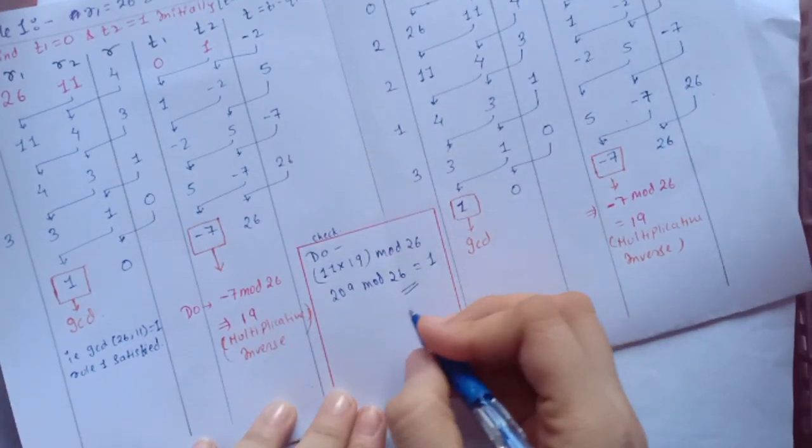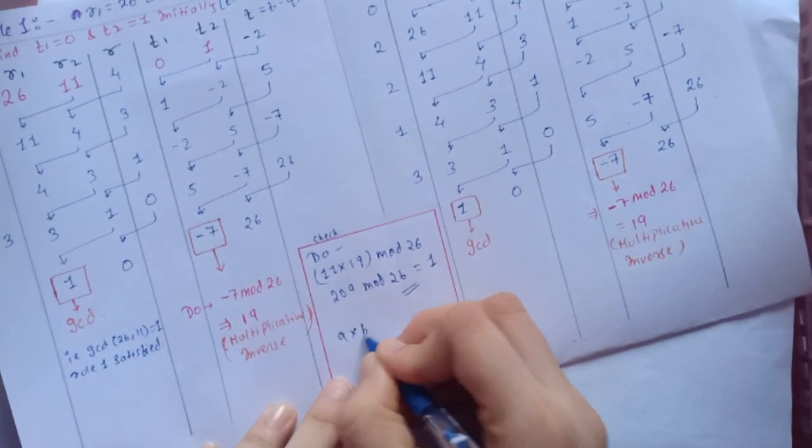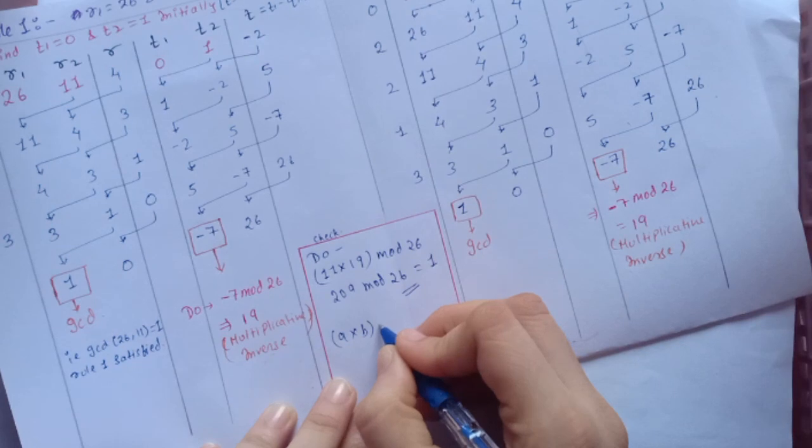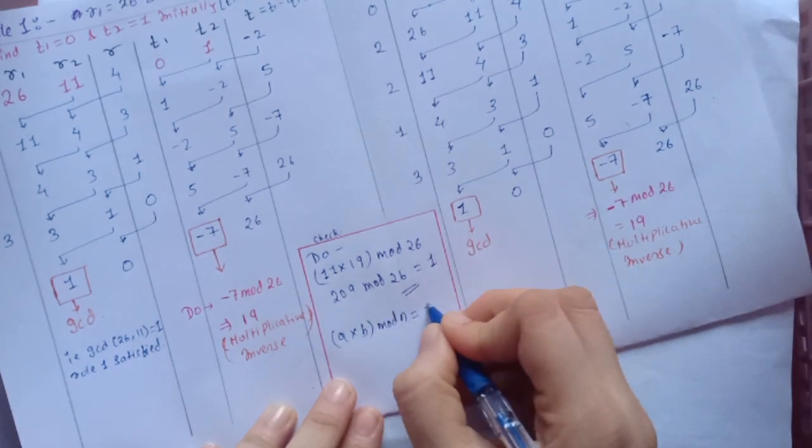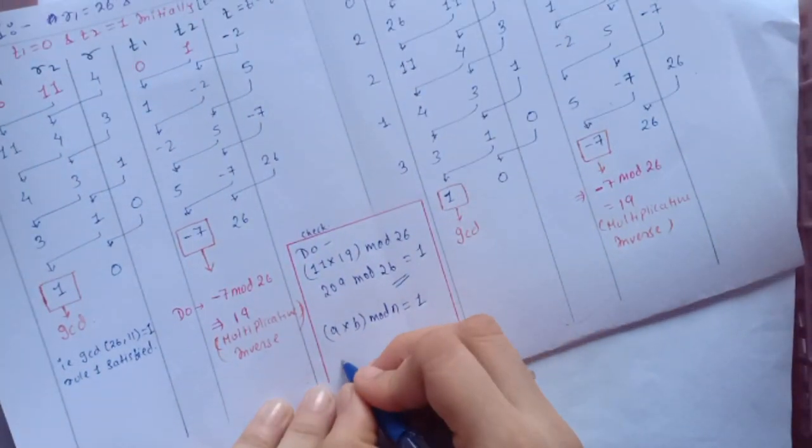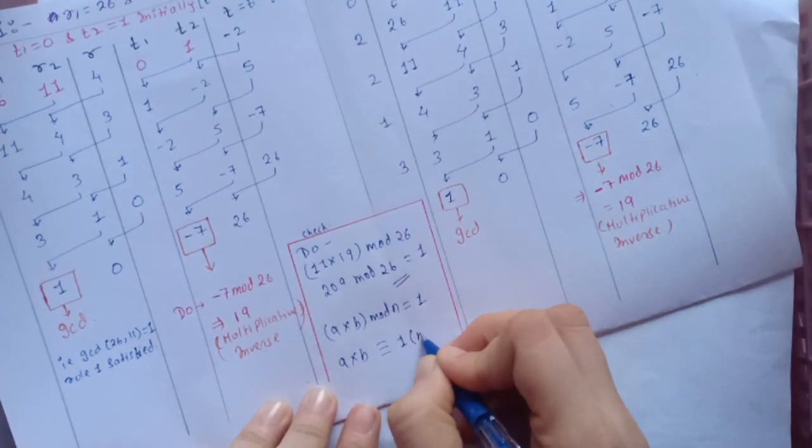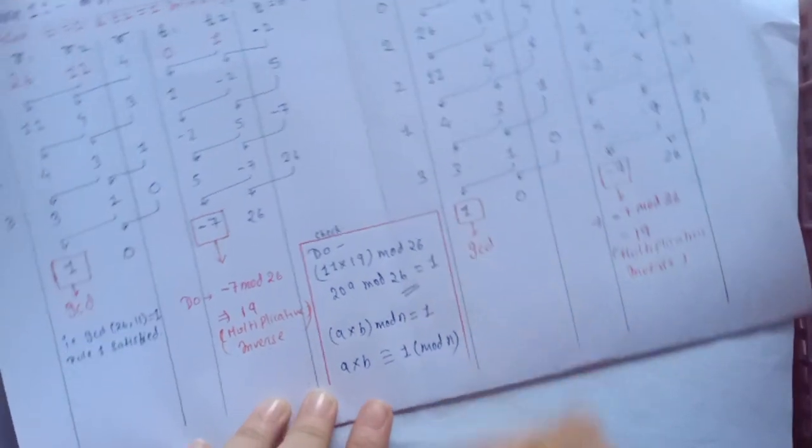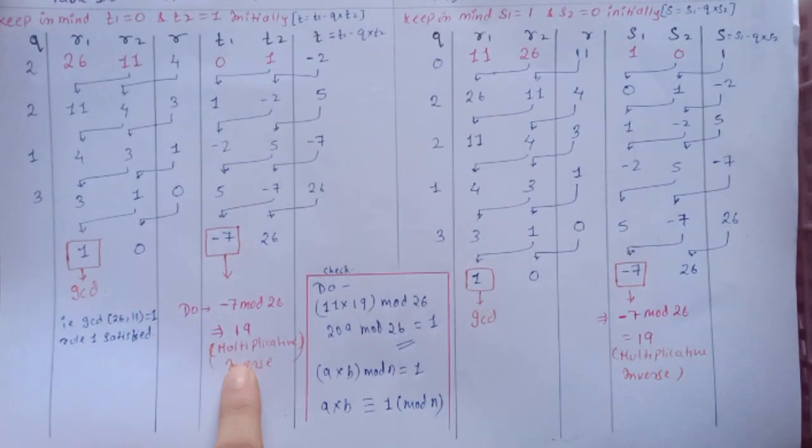So the condition is satisfied that a into b mod n is equal to 1, or either ways we can write as a into b congruent to 1 mod n. Thus we check that our inverse is correct.